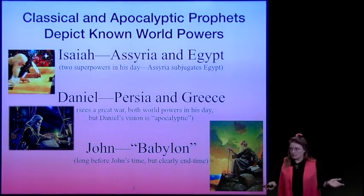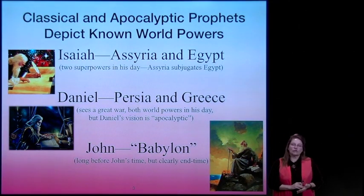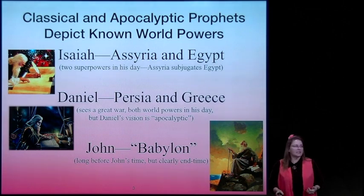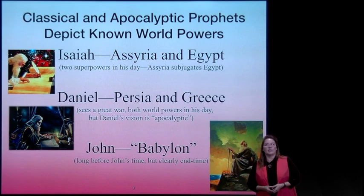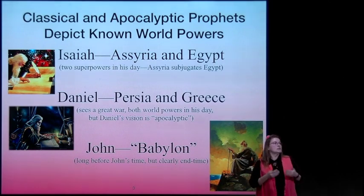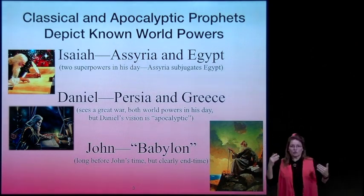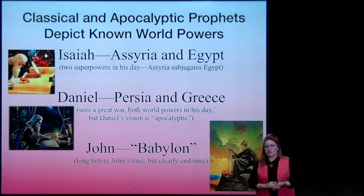Isaiah uses Assyria and Egypt. Do you remember that Assyria would take the 10 northern tribes captive in Assyria's day? Israel was in Isaiah's day—Israel was taken captive by Assyria—and Isaiah watched that happen and predicted that it would happen. Then he also showed that Assyria would go down in his day and also conquer Egypt.